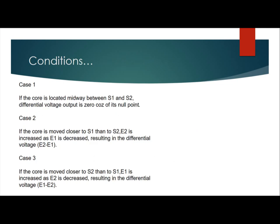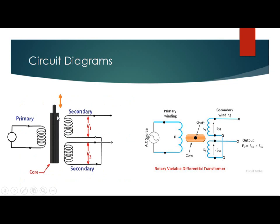There are three conditions for LVDT. In case one, if the core is located midway between S1 and S2, the differential voltage output is zero because of its null point. If the moving core is centered between the two secondary coils, we consider the result as E1 minus E2. Since the voltages of the two secondary coils are equal, E1 minus E2 equals zero.